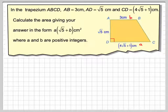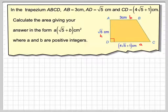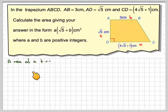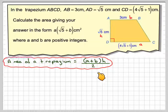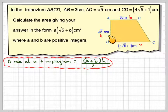If we label the parallel sides A and B — these are not the same A and B from the question — and the height as H, the area of the trapezium will be A plus B times H over 2. You add together the two parallel sides and multiply by H.